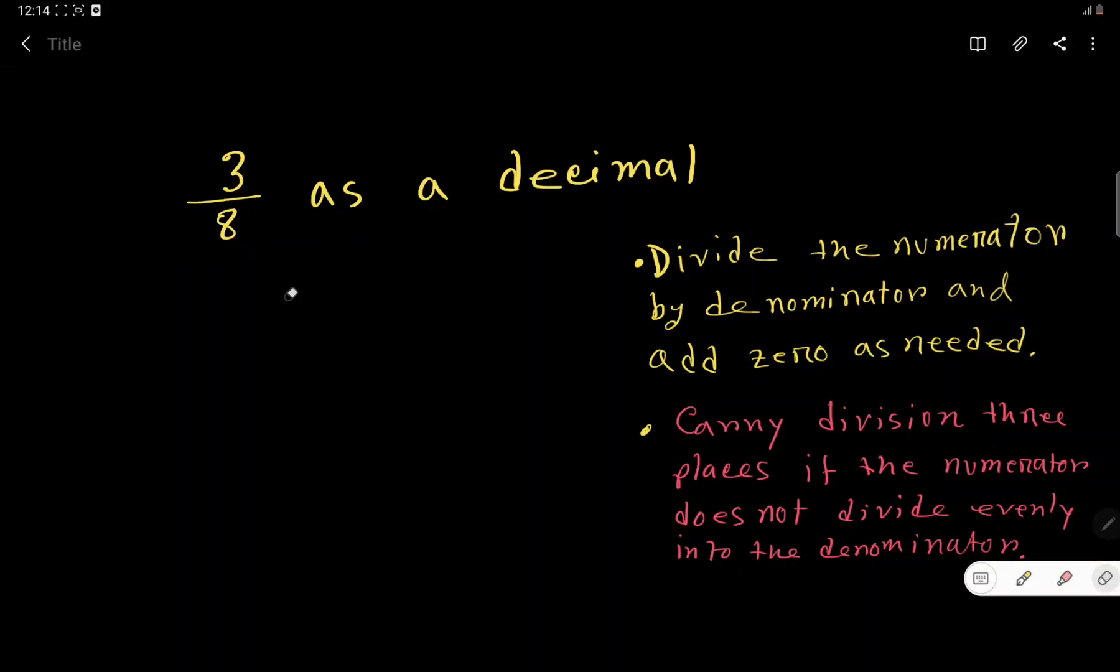3 over 8 as a decimal. To express this fraction as a decimal, we have to divide the numerator by the denominator. Here the denominator is 8 and the numerator is 3, so we divide the numerator by the denominator.